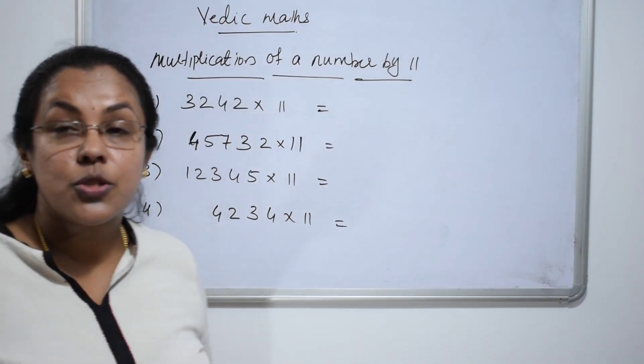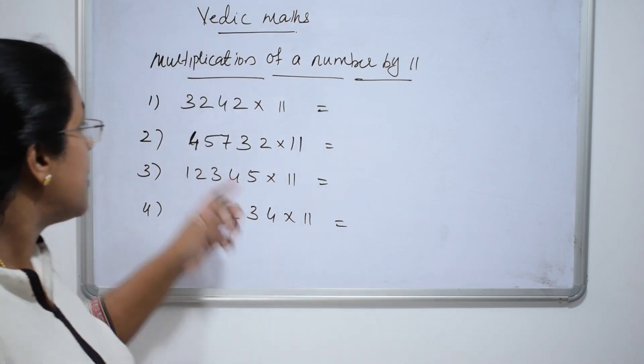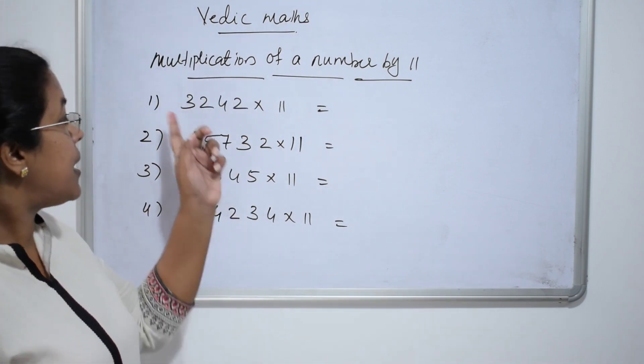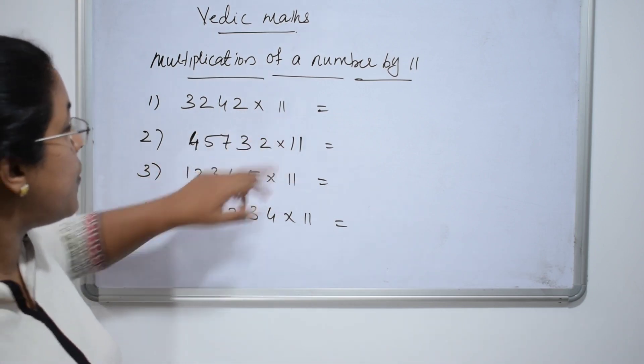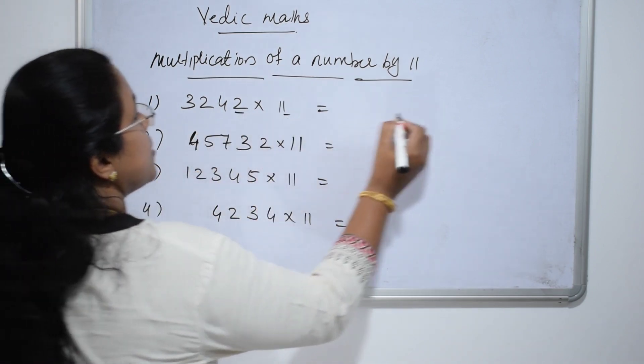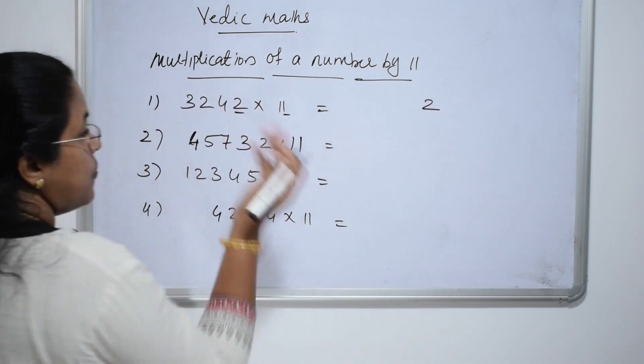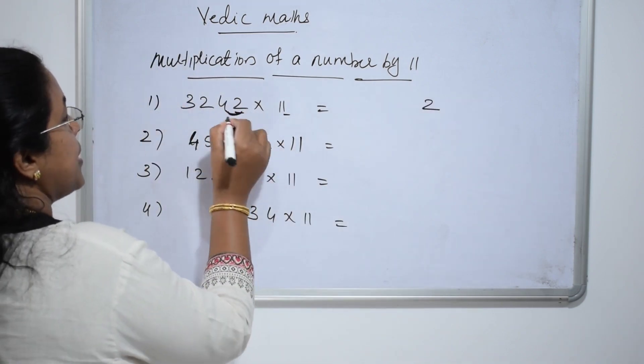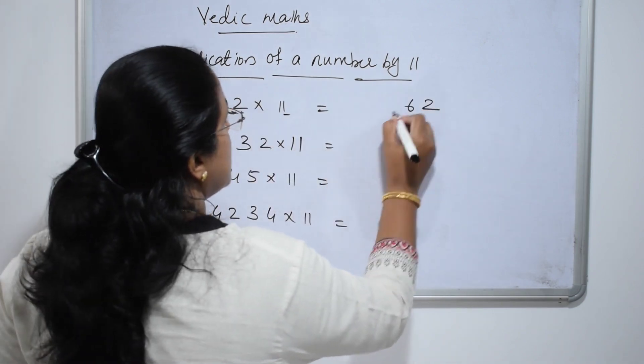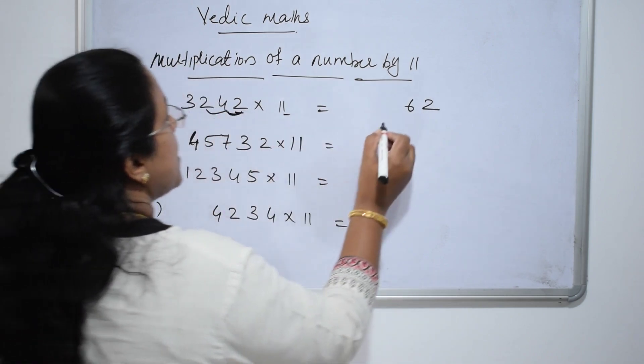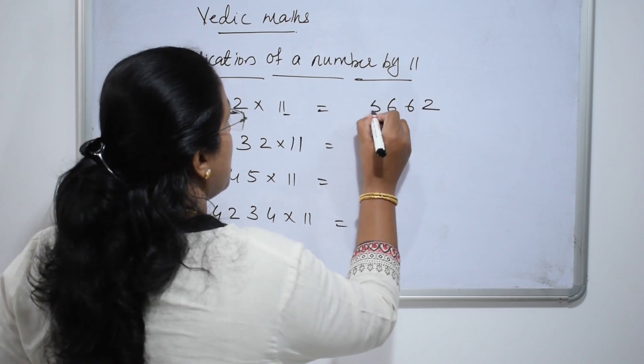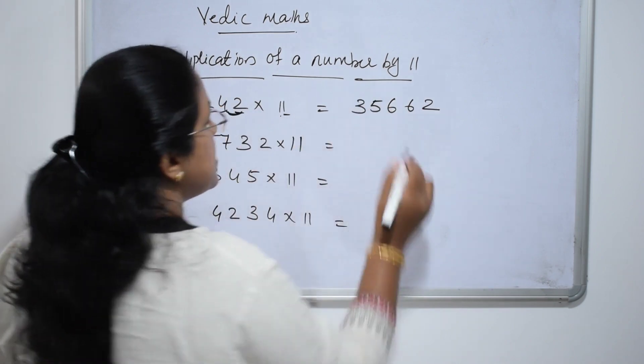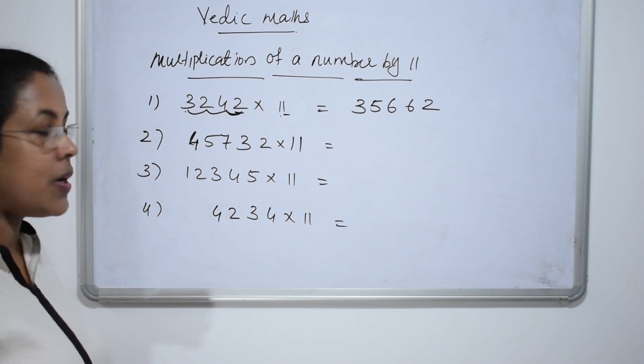We will solve some more questions. How to multiply 3242 into 11. What is the procedure? First, 2 into 1. 2 times 1 is 2. For next digit, add the 2 numbers. 4 plus 2, 6. Again, 4 plus 2, 6. 3 plus 2, 5. And 3 into 1 is 3.